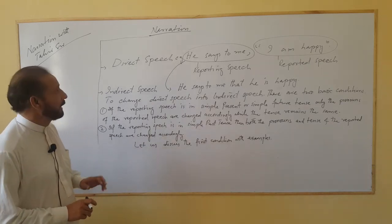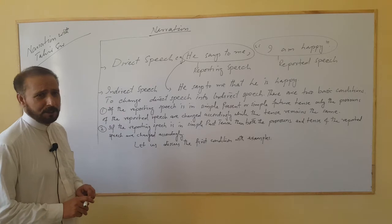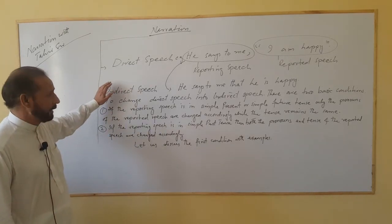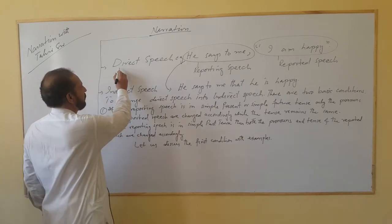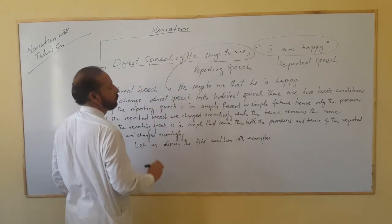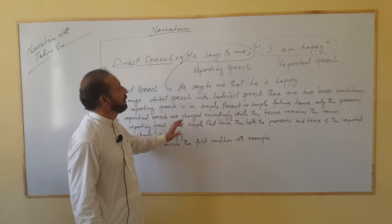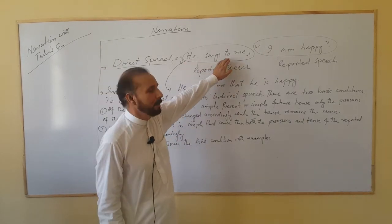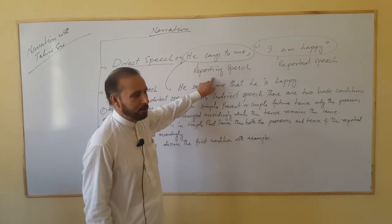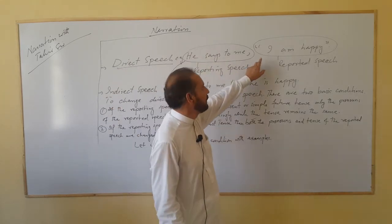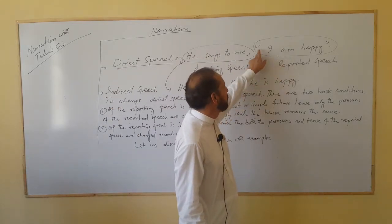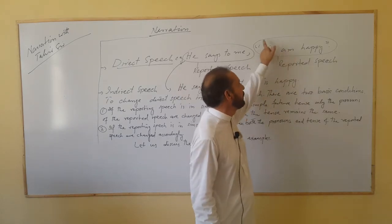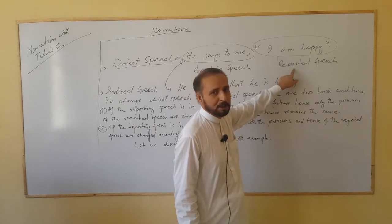There are two parts of narration. One is called direct speech and the other is called indirect speech. Now direct speech has two parts: one is called reporting speech — for example, 'he says to me' is the reporting speech — while the reported speech is quoted in inverted commas, such as 'I am happy.' This is called reported speech.